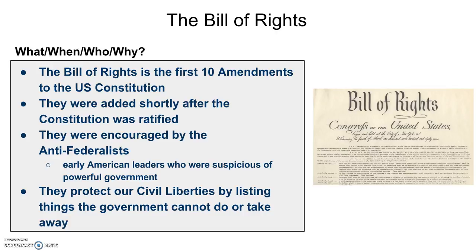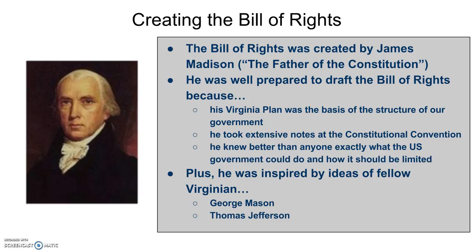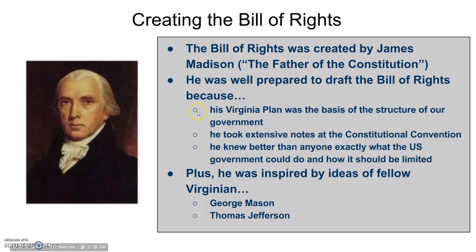There are several important historic individuals that played a part in shaping the Bill of Rights. The first, and by far the most important, is James Madison. He played a tremendous part in not only creating the Bill of Rights but also the Constitution itself. When the Constitution was ratified, he took it upon himself to design the Bill of Rights. He was in a great position to do this because of his previous experience creating the Constitution, and his Virginia Plan formed the basic structure of our government, so he understood how government would operate.